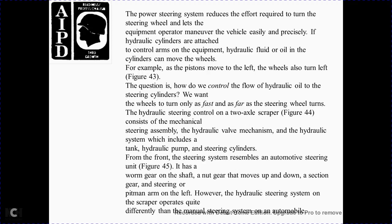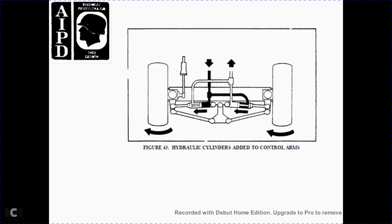The question is how do we control the flow of hydraulic oil to the steering cylinders? We want the wheels to turn only as fast and as far as the steering wheel turns. The hydraulic steering control on a two-axle scraper, shown in Figure 44, consists of the mechanical steering assembly, hydraulic valve, hydraulic system components including the hydraulic tank, pump, steering cylinder, and the front steering system. This is reassembled similar to the automotive steering shown in Figure 45, with the worm gear and shaft, nut gear moving up and down, section gear, and the pitman arm. However, the hydraulic steering system on the scraper operates quite differently from the manual steering system on an automobile.